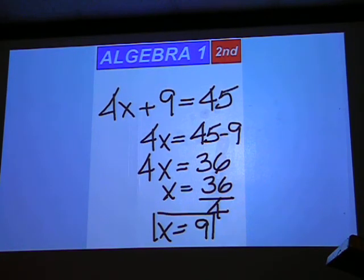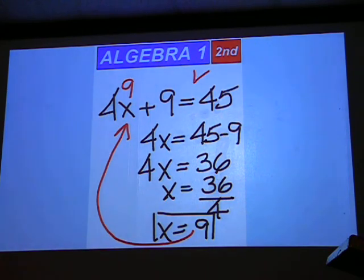You can go back and check your work by putting in a 9 in for x. 4 times 9 is 36. Plus 9 is 45. So that checks out and this is the right answer. x equals 9.